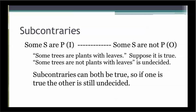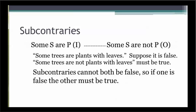What about subcontraries? If 'some trees are plants with leaves' is true, does it necessarily follow that 'some trees are not plants with leaves' is false? No, both could be true. So subcontraries can both be true, which means if you know that one is true, the other subcontrary is still undecided. But what if we start with a false subcontrary? If 'some trees are plants with leaves' is false, does it necessarily follow that 'some trees are not plants with leaves' is true? Yes, it does. Subcontraries cannot both be false, which means that if you know that one is false, the other subcontrary must be true.